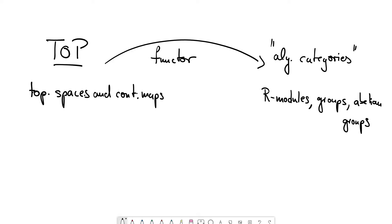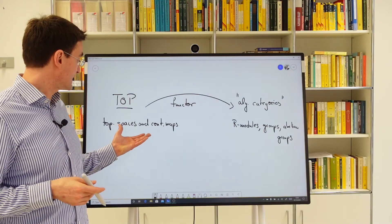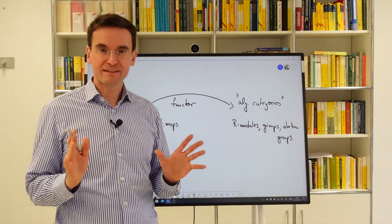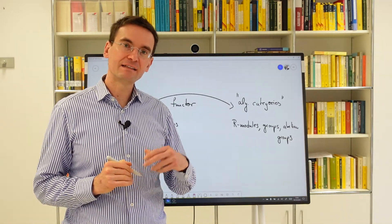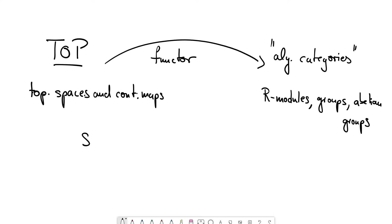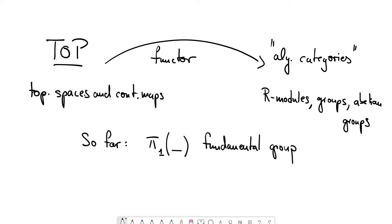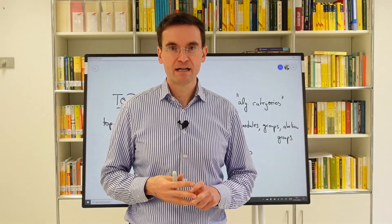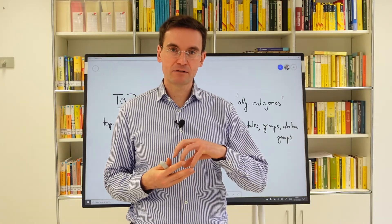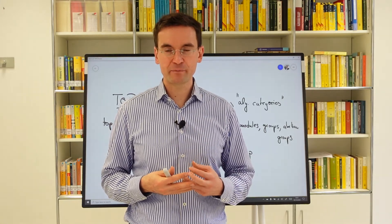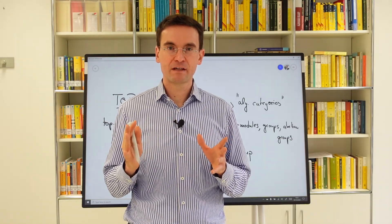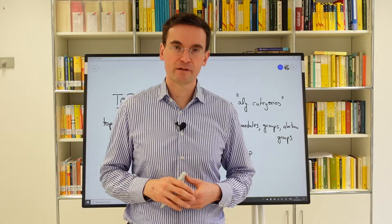In the previous course we constructed one such functor from the category of topological spaces. More precisely, we considered pointed topological spaces and this functor was the fundamental group. Now, to motivate the main topic of this course — singular homology theory — I want to revisit the construction of the fundamental group, look at how its elements appear, and explore how we could generalize this to more powerful functors from Top to some algebraic category.